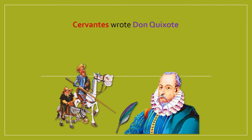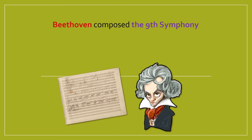More examples: 'Cervantes wrote Don Quixote' — Don Quixote is a famous book from the late middle ages. Passive: 'Don Quixote was written by Cervantes.' Active: 'Beethoven composed the Ninth Symphony.' Beethoven was an Austrian composer from the 18th century. Passive: 'The Ninth Symphony was composed by Beethoven.' Active: 'Edison invented the light bulb.' Edison gets most of the credit, though Tesla may have also contributed. Passive: 'The light bulb was invented by Edison.' The object becomes the subject, you add the be verb, then 'by' and the person who did the action.